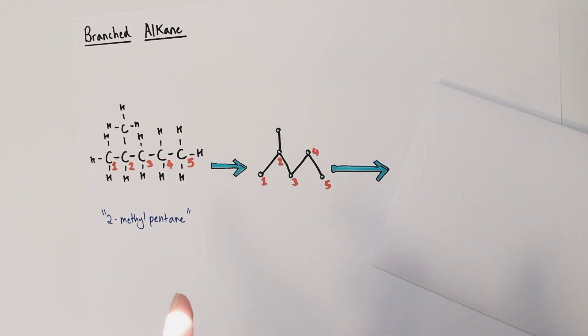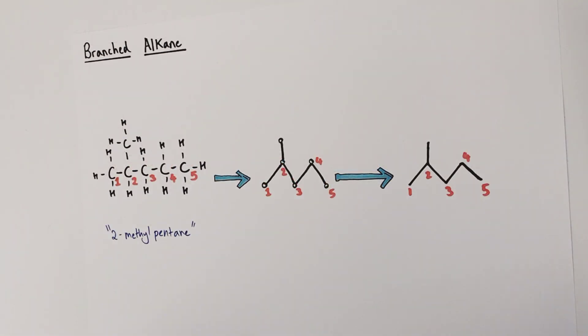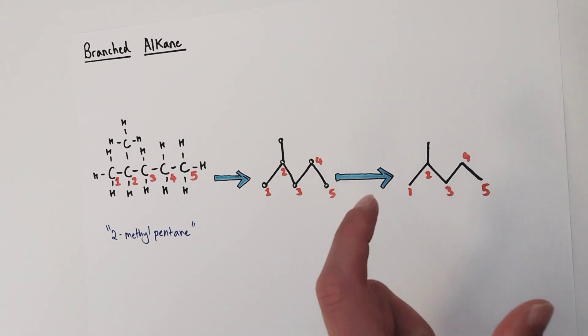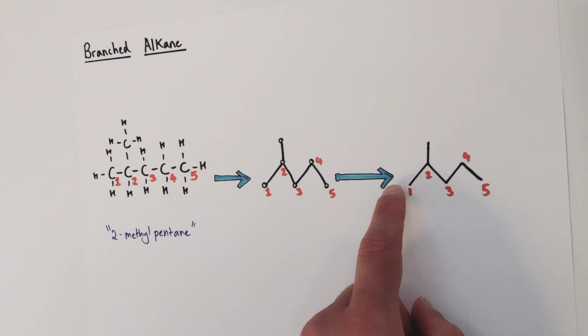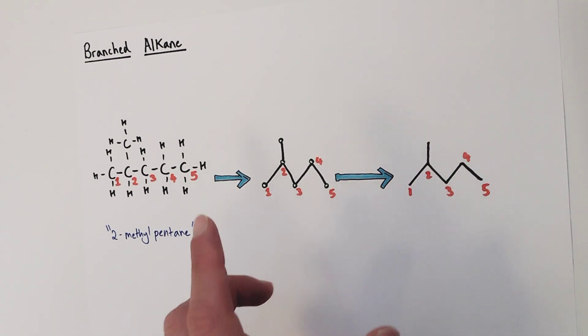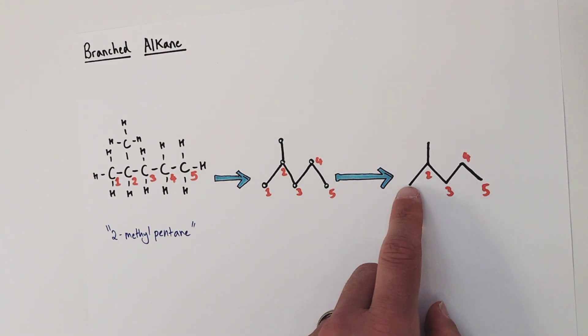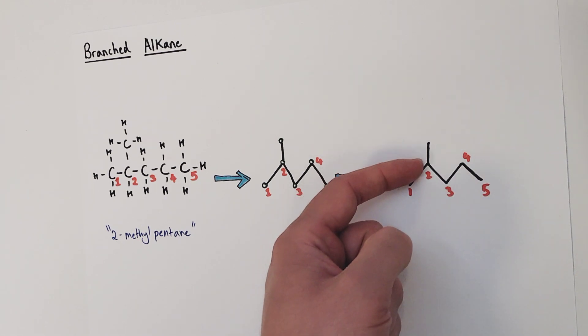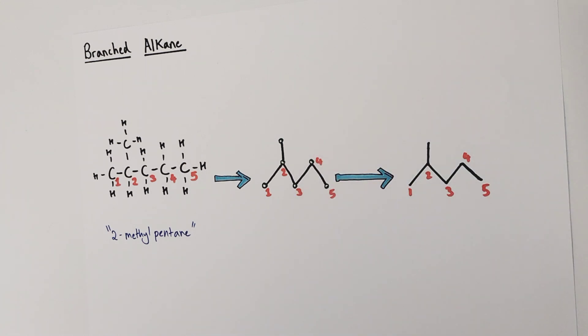This isn't quite the end. In reality we wouldn't put these points on, so we're going to simplify even further now. So this is our final skeletal structure perfect version, where we have just the lines themselves without the points still representing the carbons in those positions though.